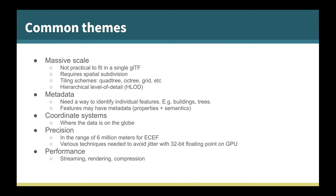What are some common themes for all these geospatial datasets? The most obvious is the massive scale — these are often planetary in scale, and it's not practical to fit them into a single GLTF. We require some sort of spatial subdivision and a tiling scheme, such as a quad tree or an octree. This is where hierarchical level of detail comes in — the ability to have simplified versions that load sooner, and only load detailed areas where needed.